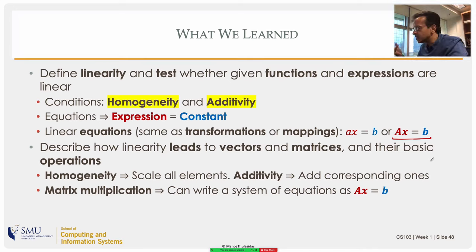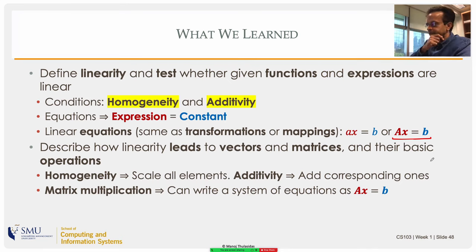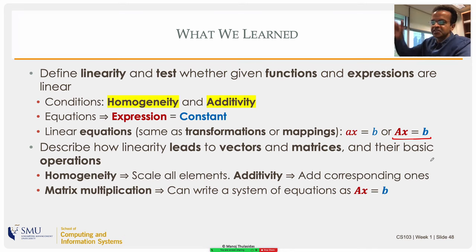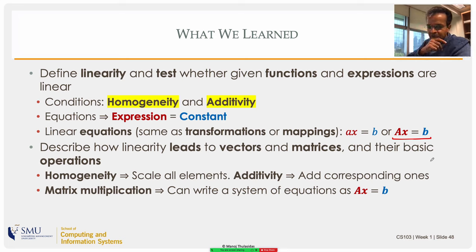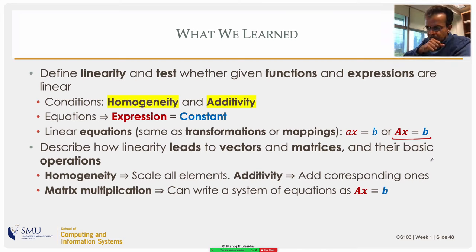This is what happens in data science: we might have a matrix with a million rows and a thousand columns — that's a system of a million linear equations in a thousand unknowns. But it has the same origin as the simple equation ax = b. So to recap: we defined linearity using two conditions — homogeneity (scale the input, the output scales by the same factor) and additivity (transformation of a sum equals sum of transformations). That led to the notion of vectors and then matrices, so that we could write multiple linear equations in the elegant compact form Ax = b.